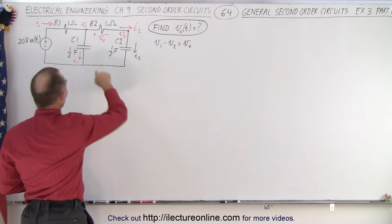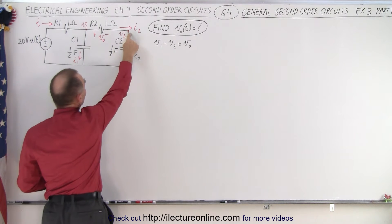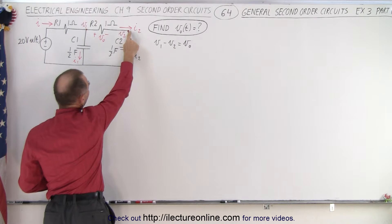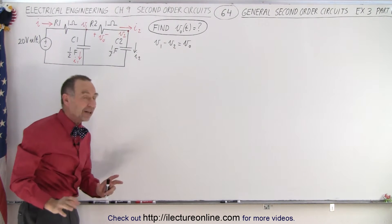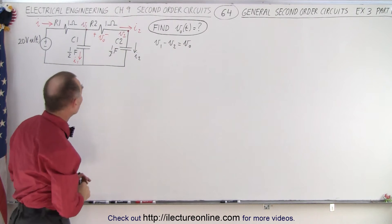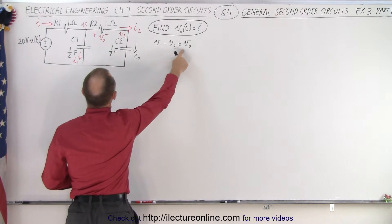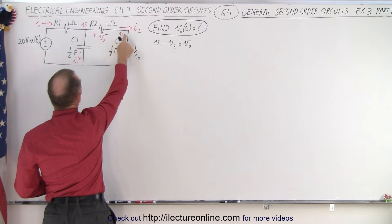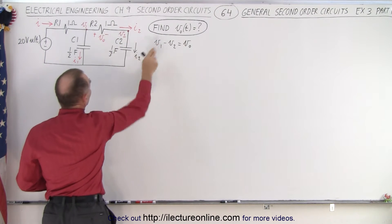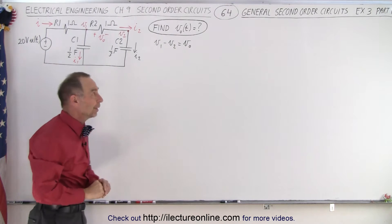To help us out, we've got this node right here. We'll call that V1 at that node and V2 over here. That's not really a node, but we can take advantage of that. Notice that V0, the output voltage, is equal to the difference between V1 and V2, so that will come in handy as well.